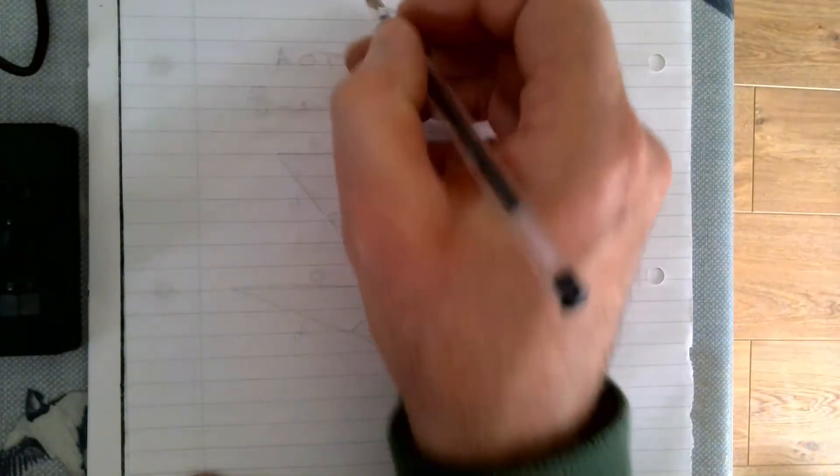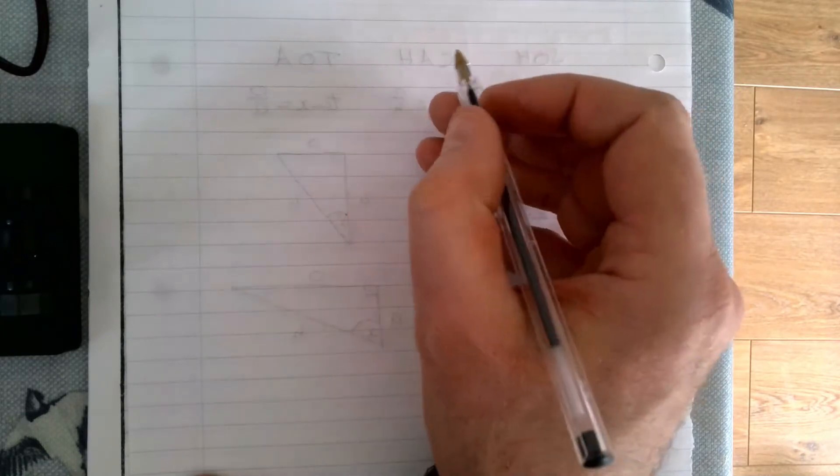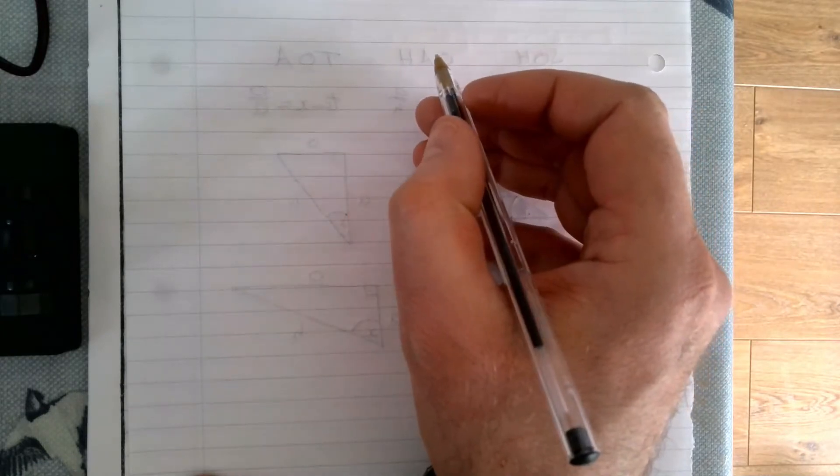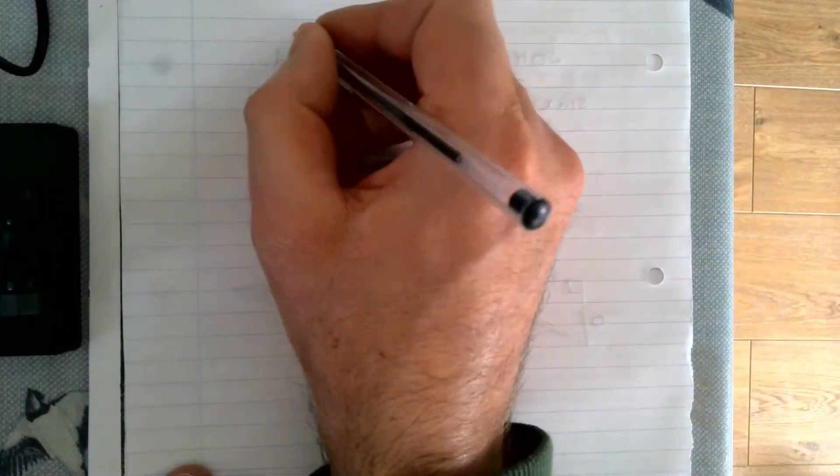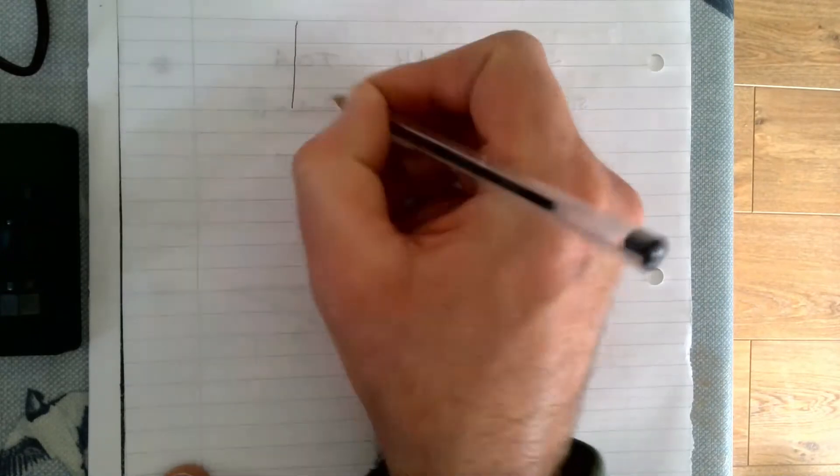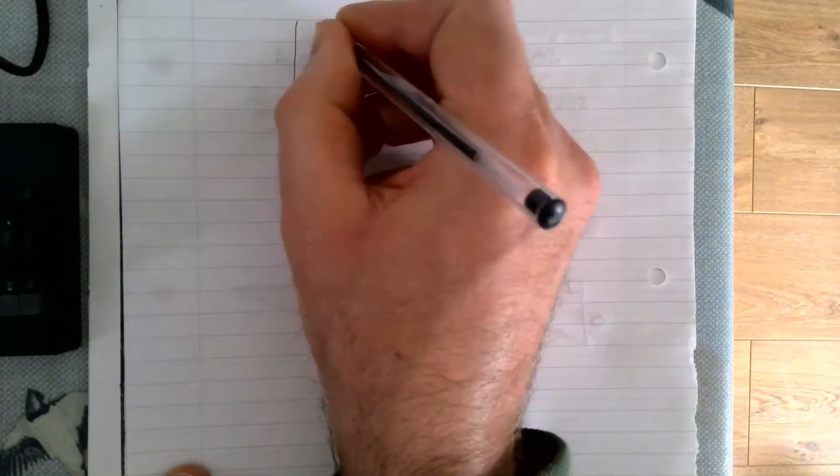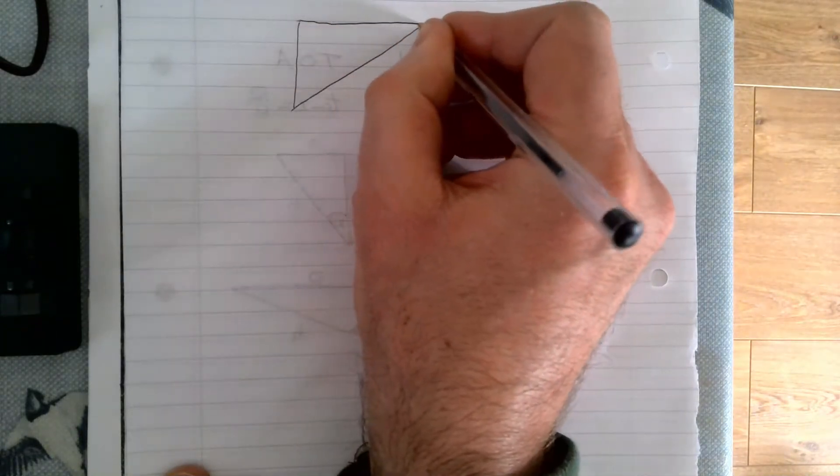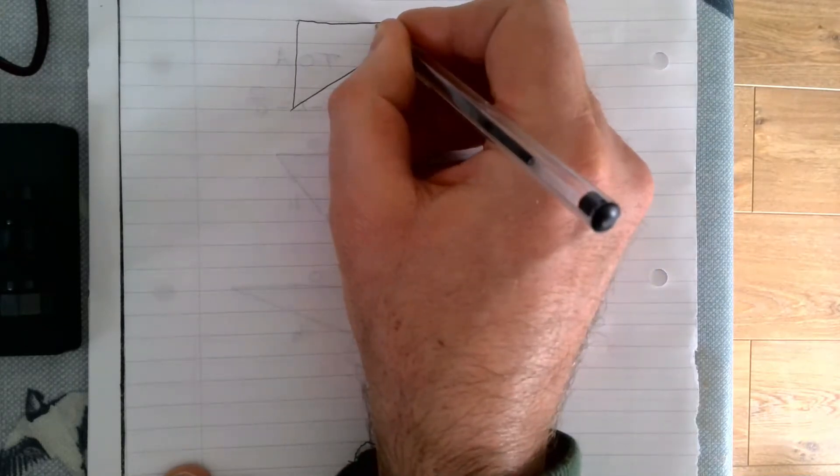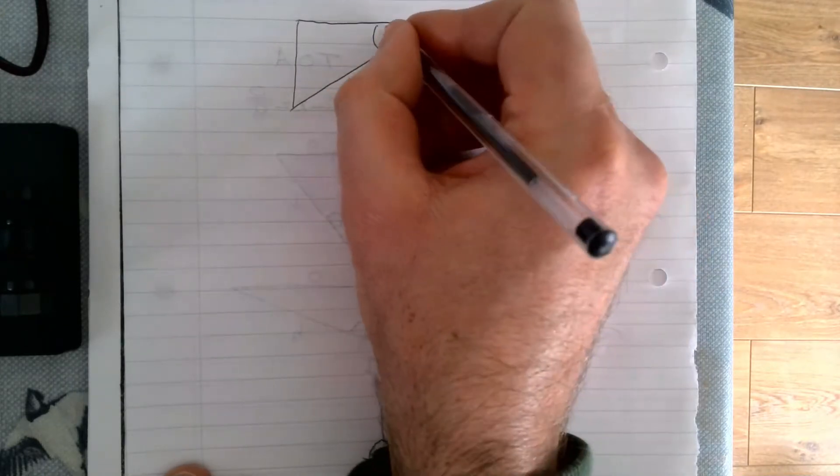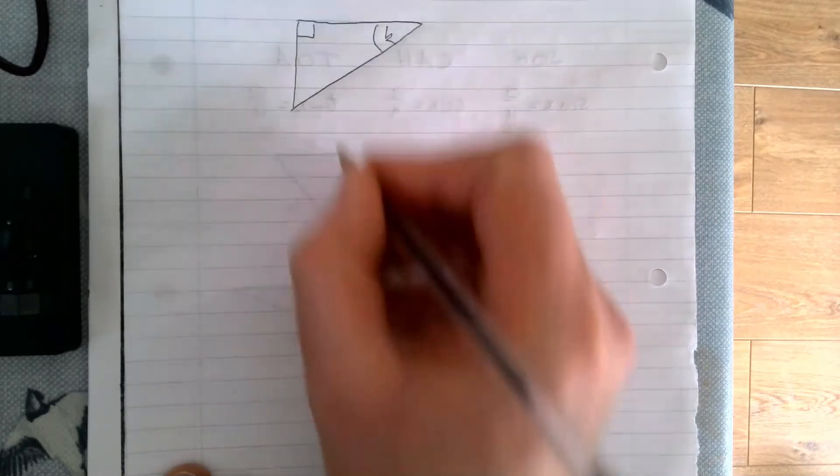This is our second trigonometry video about finding an angle. If you have a right angle triangle and you're trying to find the angle, let's call this K. Let's say that this is 3 and that this is 4, and we have to find our angle K.